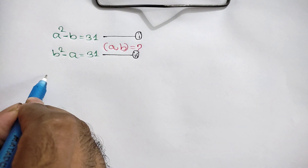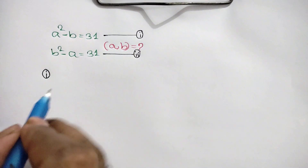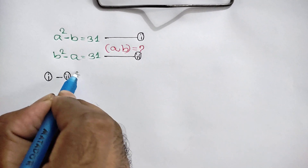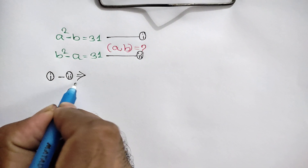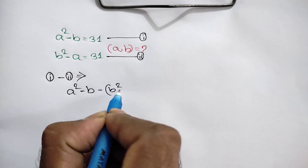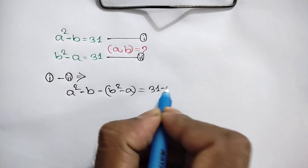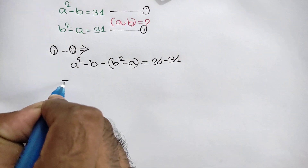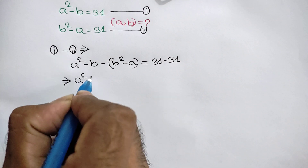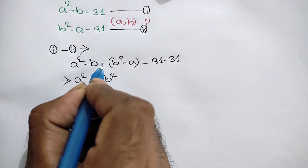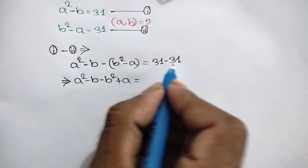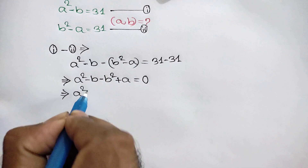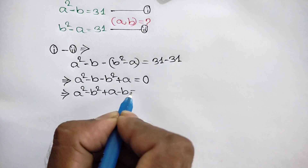Now subtracting equation 2 from equation 1, we can write: A squared minus B minus (B squared minus A) equals 31 minus 31. Expanding, A squared minus B minus B squared plus A equals 0. Rearranging the left side, we get A squared minus B squared plus A minus B equals 0.